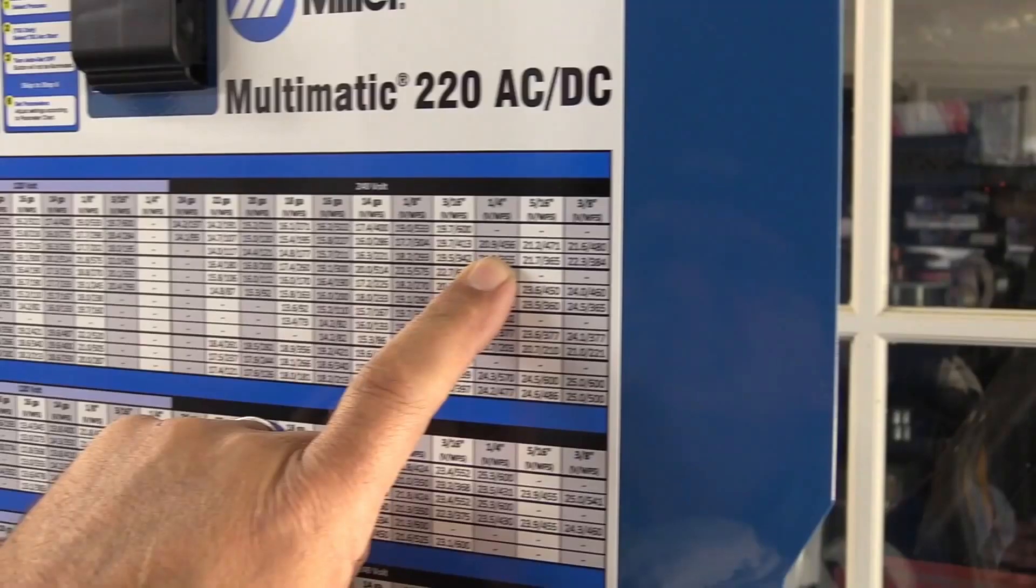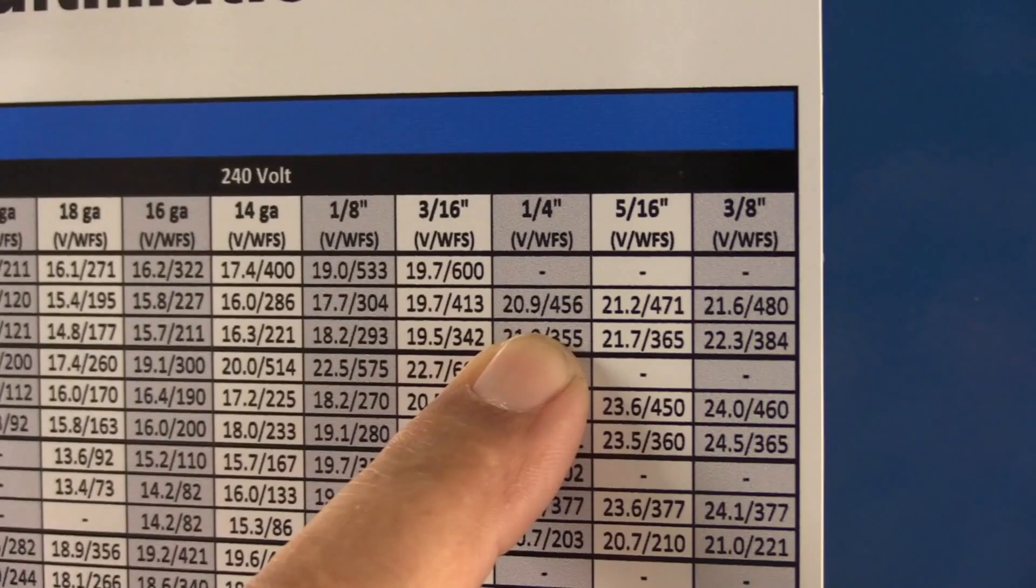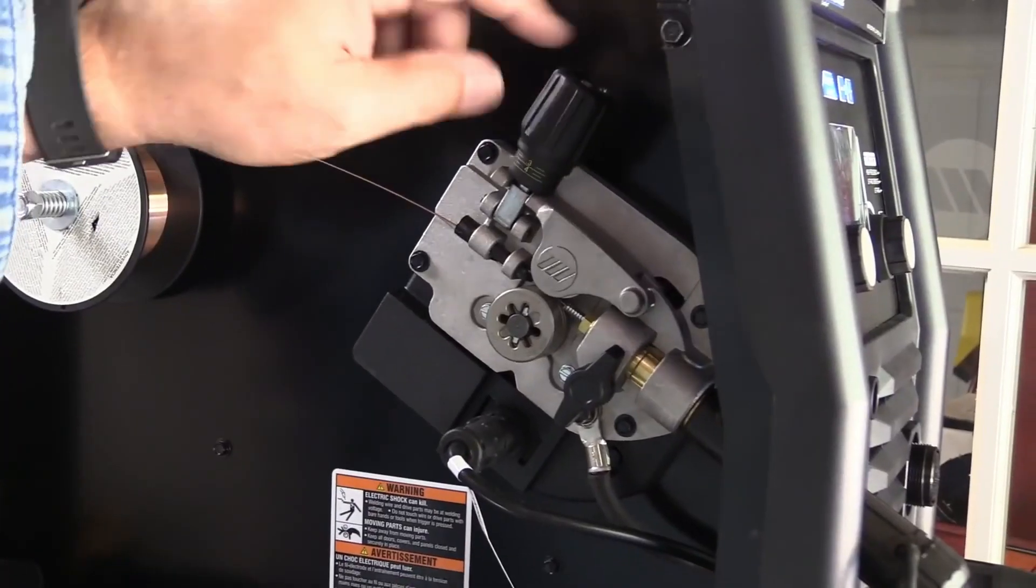Now we're going to do a little vertical uphill. Now those hot settings that I just used that are recommended here on the chart or on the auto set, those are recommended for flat and horizontal and they're good and hot for flat and horizontal. They're a little hard to handle going uphill.